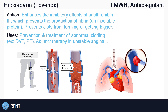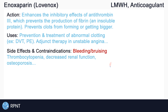Enoxaparin reduces both normal and abnormal blood clotting, meaning it may take longer for regular cuts or injuries to heal. It increases the risk for internal and external bleeding and bruising. Enoxaparin is contraindicated in clients with uncontrolled active bleeding or thrombocytopenia — low platelet count — due to the increased risk for hemorrhage. Other side effects include decreased renal function and osteoporosis with long-term therapy.